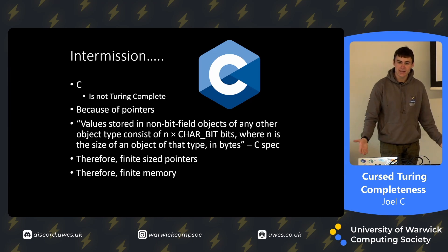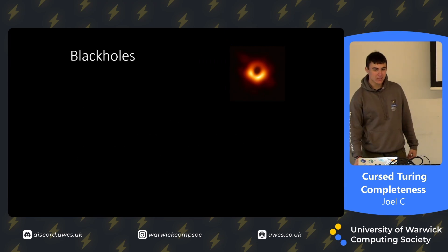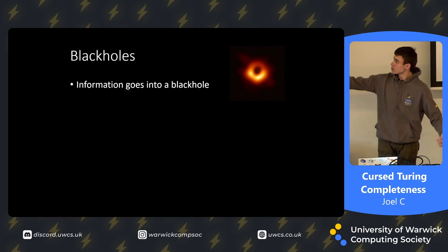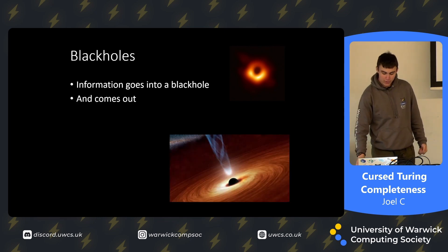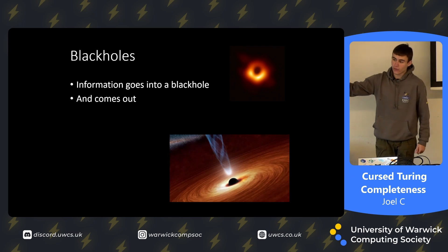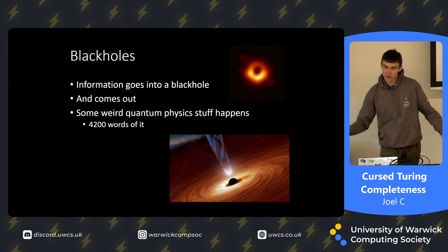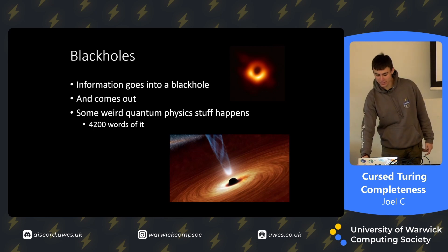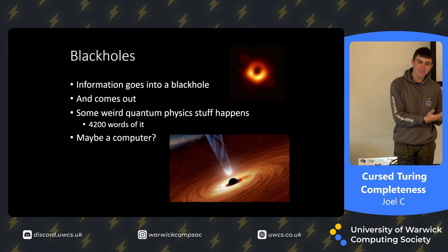And now we move on to the really cursed stuff. First: black holes. As anyone who's taken A-level physics knows, information goes into them. What you might also know from Stephen Hawking's work is that radiation also comes out as Hawking radiation. We initially thought this was random, but apparently — based on 4,200 words of quantum physics I didn't understand at all — there may be some processing going on, which means we can't definitively prove a black hole is not a computer.